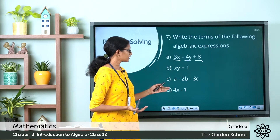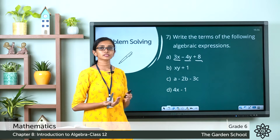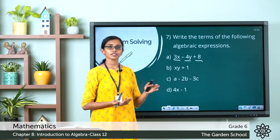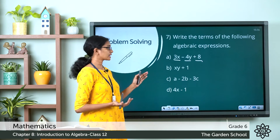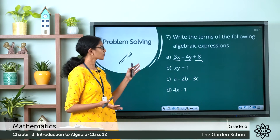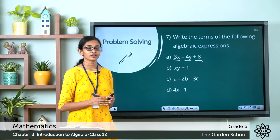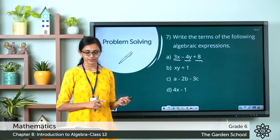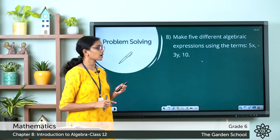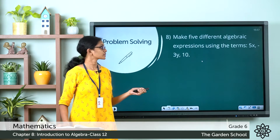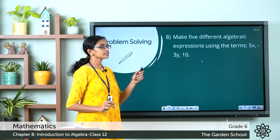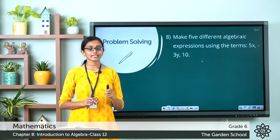In the remaining expressions given, identify the terms in each and list them in your notebook. That's question number 7. Now let's see question number 8: make 5 different algebraic expressions using the terms 5x, minus 3y, and 10.